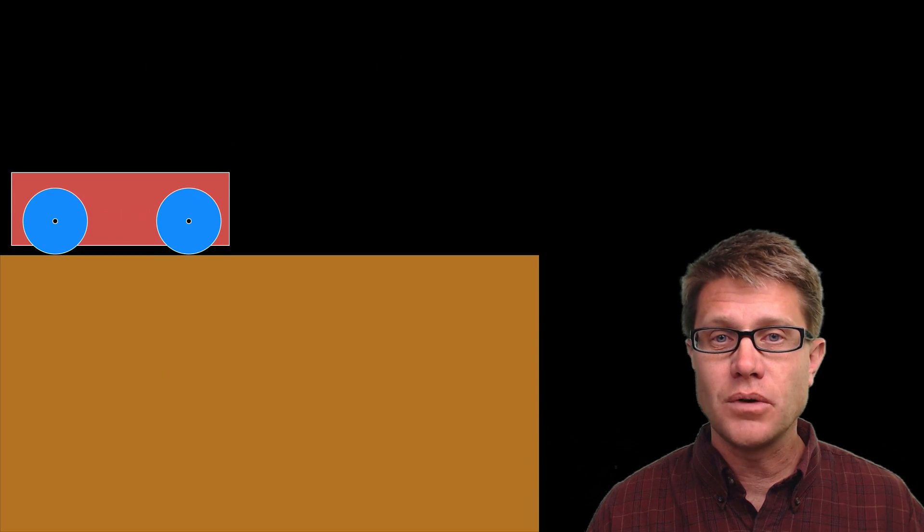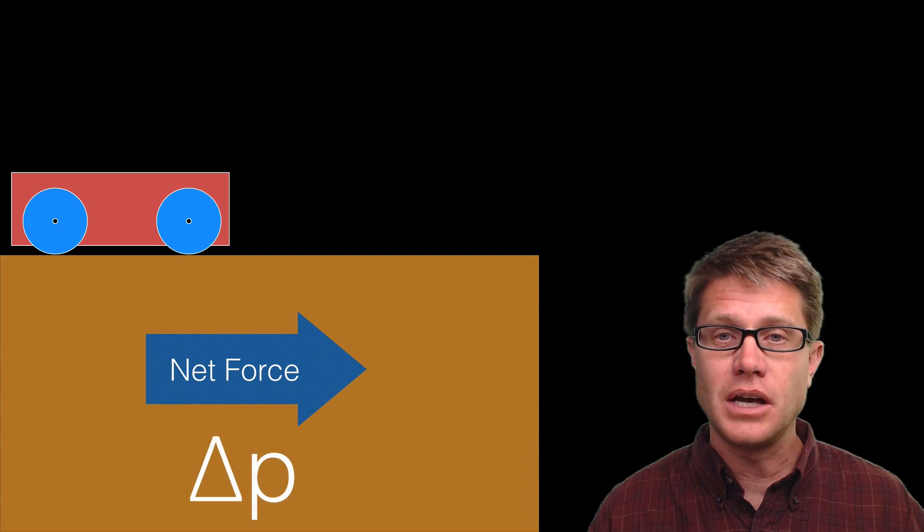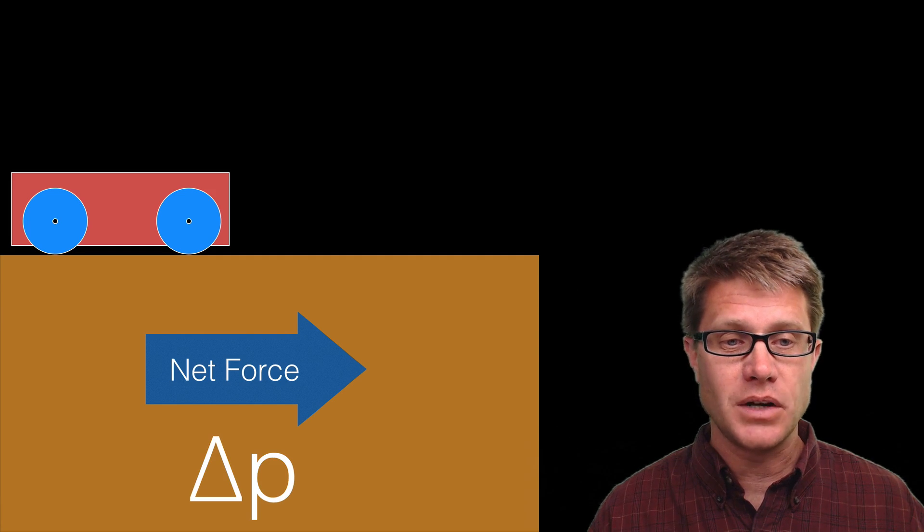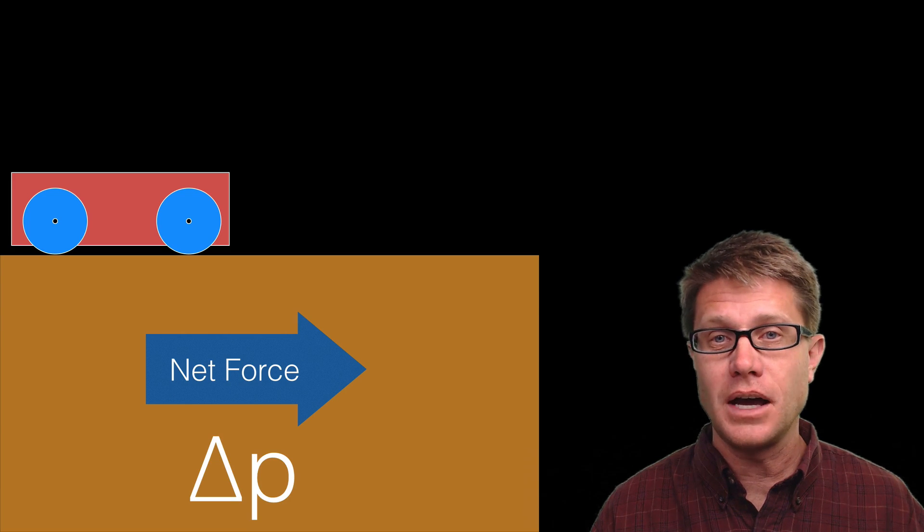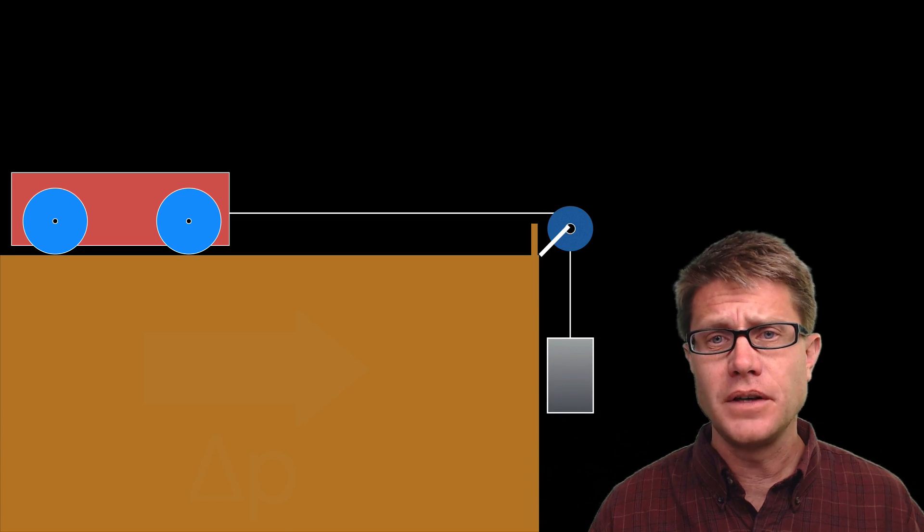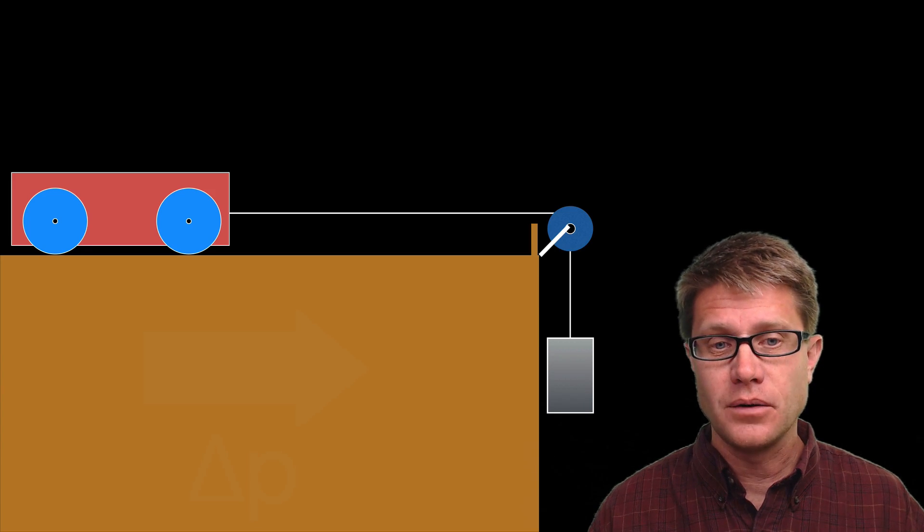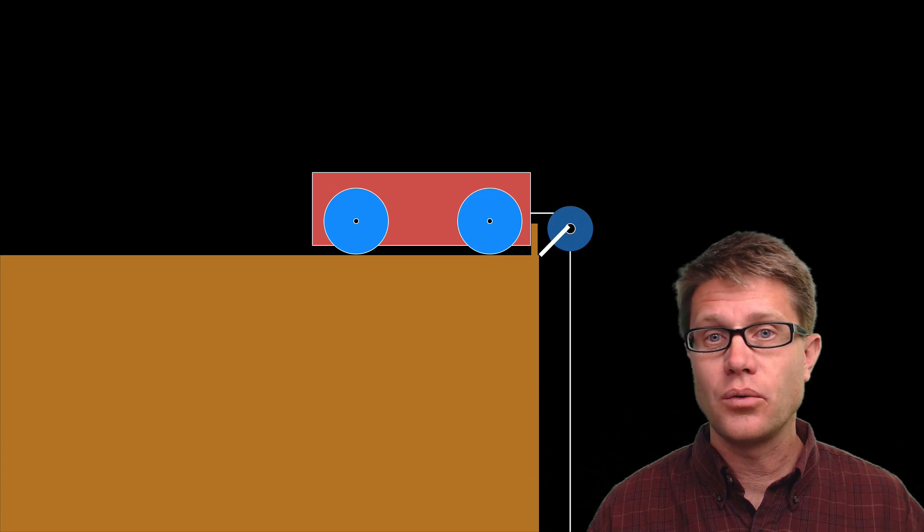Now one thing that you need to remember is that the net force on an object is going to affect that change in p or that change in momentum. And so let's say we have an object like this, a cart that is at rest. It has no momentum. But we apply a net force to it. How would we do that in a physics lab? We are just going to connect it to a weight. And so now we are going to apply a net force to the right. What is going to happen to our momentum? It is going to increase to the right.